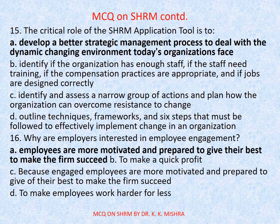Question number 15. The critical role of the SHRM application tool is to — Options are A. Develop a better strategic management process to deal with the dynamic changing environment today's organizations face. B. Identify if the organization has enough staff, if the staff need training, if the compensation practices are appropriate, and if jobs are designed correctly. C. Identify and assess a narrow group of actions and plan how the organization can overcome resistance to change. D. Outline techniques, frameworks, and six steps that must be followed to effectively implement change in an organization. Correct option is A.